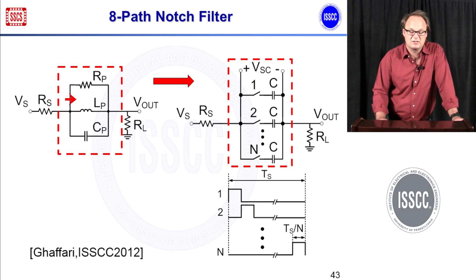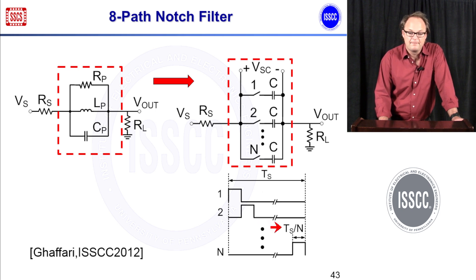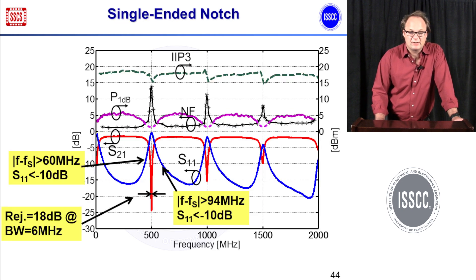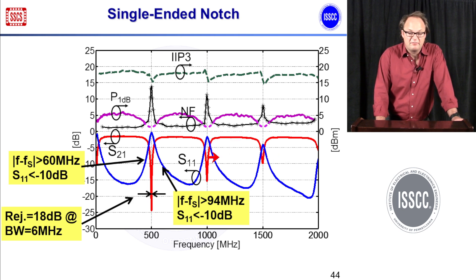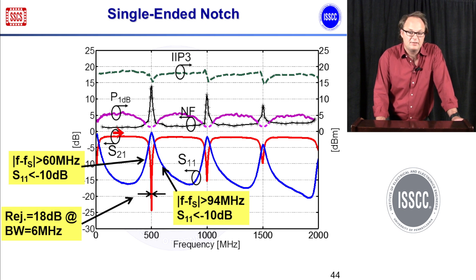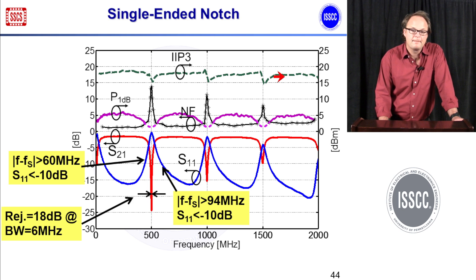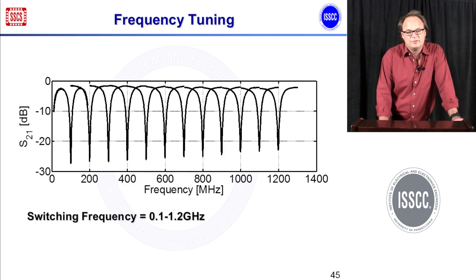You can also make a notch instead of a bandpass filter. If you make this LC tank it works as a notch — it just stops frequencies at the resonating frequency. You can make the circuit with 50 ohm in, 50 ohm out, and just a bunch of capacitors and switches timed like this, and that works as a notch filter. The measurements of the single-ended notch show that around the clock there's a notch, but there's a second harmonic and third harmonic notch too. You can get rid of them by making a differential version. Interestingly, the insertion loss is about 2 dB and the noise figure is also 2 dB — the noise figure is roughly equal to the insertion loss, exactly like in passive filters. The linearity is extremely good: IIP3 is close to 20 dBm, and you can tune the frequency from 100 MHz to 1.2 GHz.